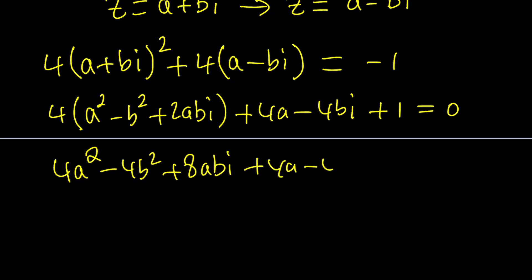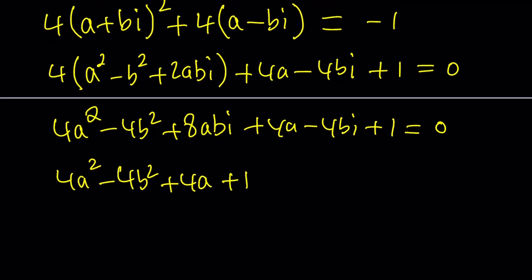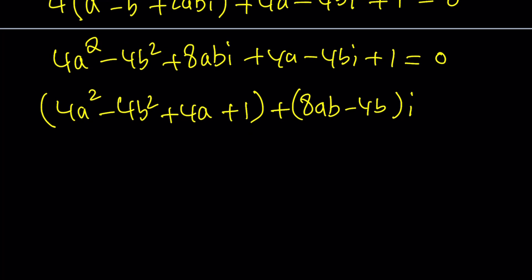Let's distribute and then separate the real parts and the imaginary parts. We're going to combine like terms. So we have 4a² - 4b² + 4a + 1 as the real part, and then the imaginary parts are 8ab - 4b, all multiplied by i. You can add 1 to both sides or leave the -1 alone; either way is fine. Since this complex number equals 0, 0 is a very special number because it can only be written as 0 + 0i. In other words, both the real part and the imaginary part have to be 0.